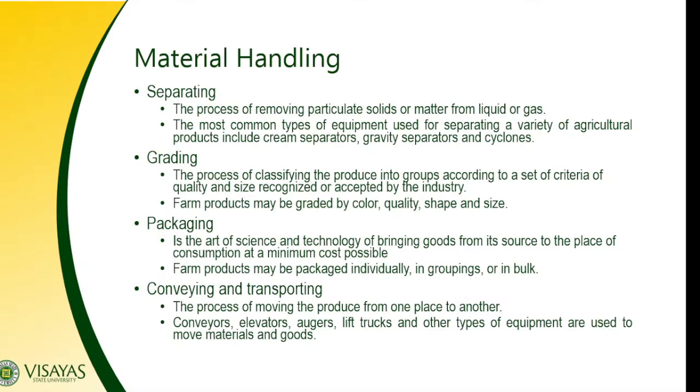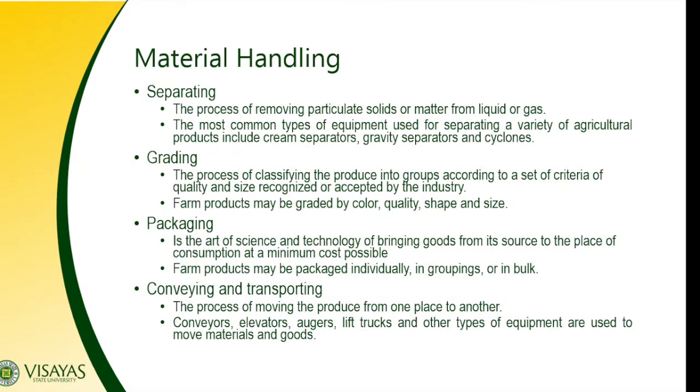We also have grading. Grading is the process of classifying produce into groups according to a set of criteria of quality and size recognized or accepted by the industry. Grading differs from sorting in that grading uses criteria recognized by the industry — such as Grade 1, Grade 2, or Class A, Class B, Class C, or Type 1, Type 2, Type 3 — various grading systems used for fruits and vegetables.